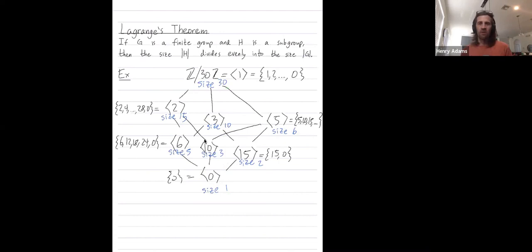So this is a nice picture of Lagrange's theorem. Every possible subgroup from this group z mod 30 has a size that divides into the size of z mod 30. Namely, every possible subgroup has a size that divides into 30. Thanks so much.